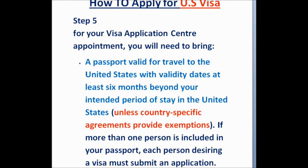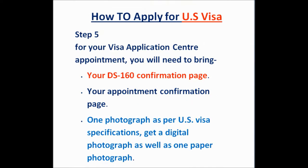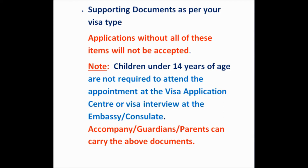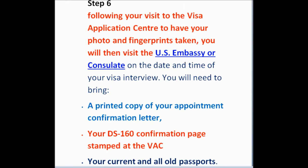For a Visa Application Center appointment, you will need to bring a passport valid for travel to the United States with a validity date at least six months beyond your intended period of stay, your DS-160 confirmation page, your appointment confirmation page, and your photograph. After your visit to the VAC to have your photo and fingerprints taken, you will visit the U.S. embassy or consulate on the date and time of your visa interview. Bring a printed copy of your appointment confirmation letter, your DS-160 confirmation page stamped at the VAC, your current and any old passports, and supporting documents as per your visa type. Applications without all these documents will not be accepted.